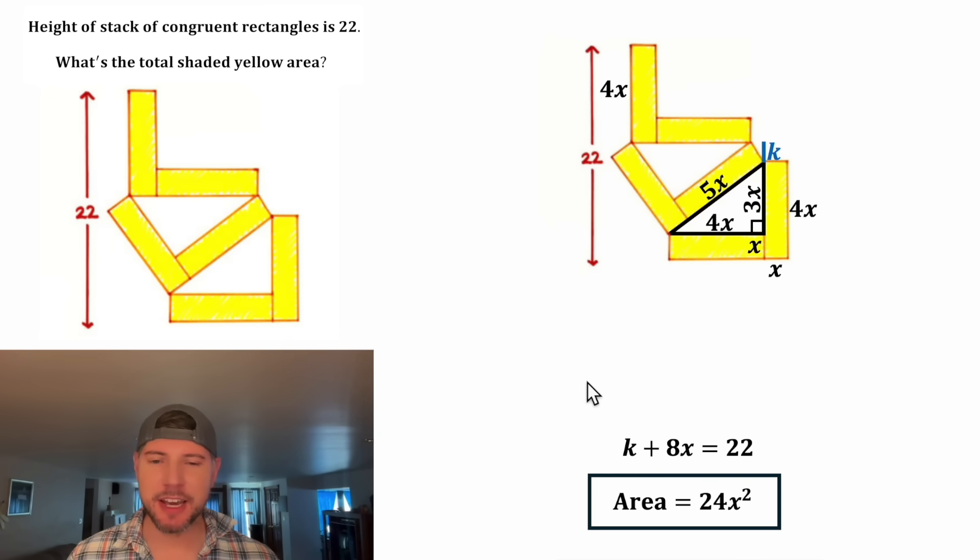So we have K plus 8X equals 22. We just introduced a new variable, so once again, we have two variables and one equation. So we've got to find another equation. Let's complete this right triangle right here. This side is equal to K, and this side, the hypotenuse, is equal to X.